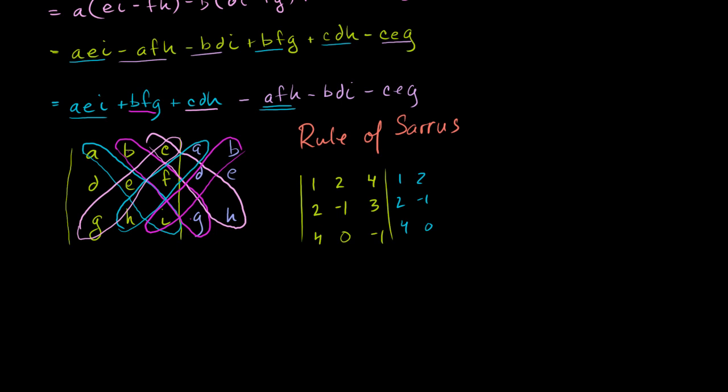And to figure out this determinant, we take this guy. So what is this going to be? 1 times minus 1 times minus 1. That is just a 1, right? The minuses cancel out. Plus this guy, plus this product right here. So what is this? 2 times 3 times 4. 2 times 3 is 6. 6 times 4 is 24. Plus 24.